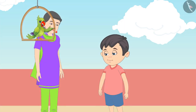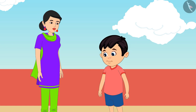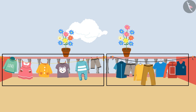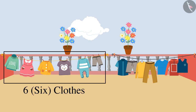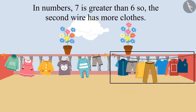Chotu, can you tell me which one of these two wires has more clothes on them? There are six clothes on this wire and seven clothes on that wire. In numbers, seven is more than six, therefore there are more clothes on the second wire.